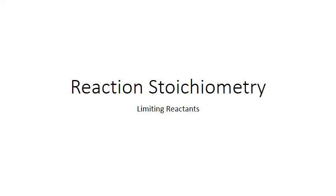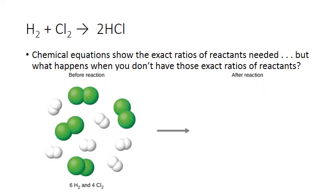In this PowerPoint we'll continue to discuss reaction stoichiometry by looking at limiting reactant situations. Chemical reactions show the exact ratio of reactants needed, but what happens when you don't have the exact ratios? For example, the coefficients in this balanced chemical equation for the synthesis of hydrogen chloride gas indicate that you need one molecule of hydrogen for every one molecule of chlorine to produce two molecules of hydrogen chloride gas. But what if you have six molecules of hydrogen and four of chlorine? How many hydrogen chloride molecules can you expect to make? This is the heart of a limiting reactant problem.